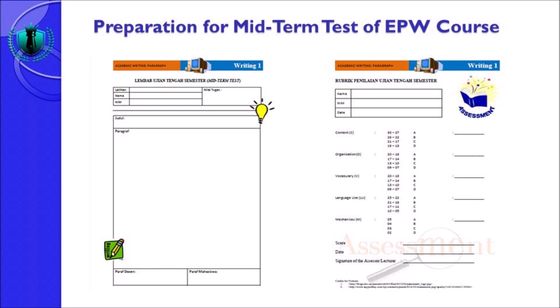Masing-masing komponen memiliki peran dan fungsi yang berbeda-beda. Content nilai tertinggi adalah 30, organization 20, vocabulary 20, language use 25, dan mechanic 5. Di bawah ada score, date, serta signature of the assessor atau lecturer. Ini untuk assessment — coba saya jelaskan satu persatu tentang rubrik penilaian tulisan ini.